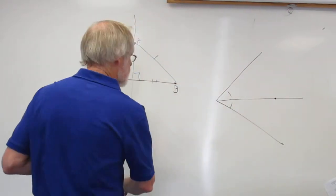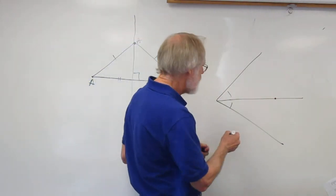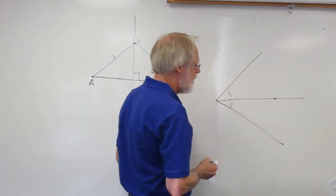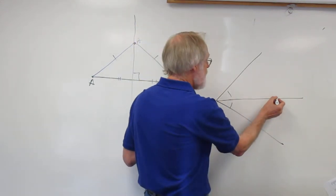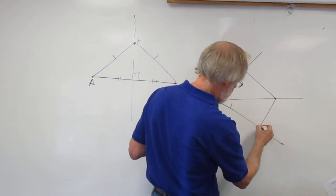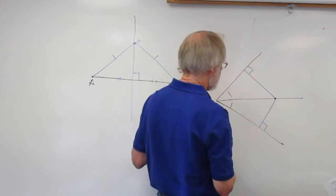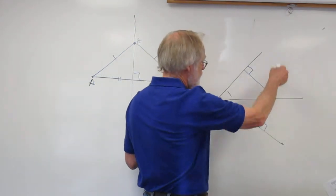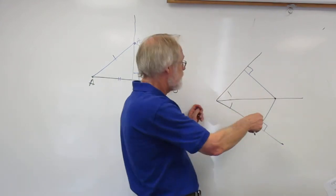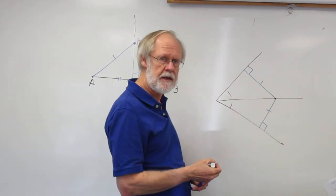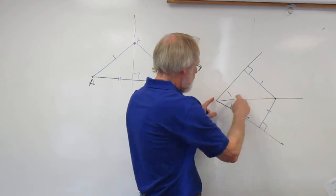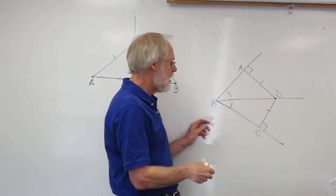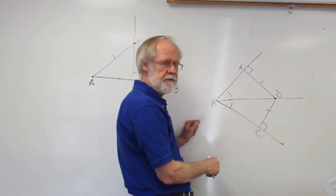Now we take a look at the Angle Bisector Theorem and its converse. I have drawn an angle and its bisector. If a point lies on the angle bisector of an angle, then it is equidistant from the sides of the angle — and those lines must be perpendicular, or the theorem doesn't work. Perpendicular is the shortest distance, and those perpendicular distances are congruent if point D lies on the angle bisector of angle ABC. Point D is on the angle bisector, and therefore it is equidistant from the two sides of the angle.